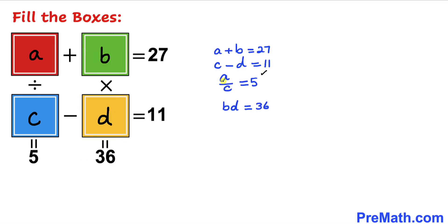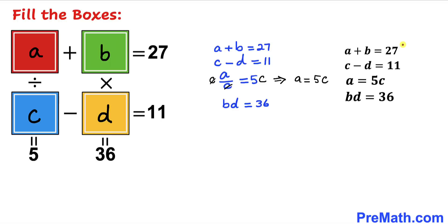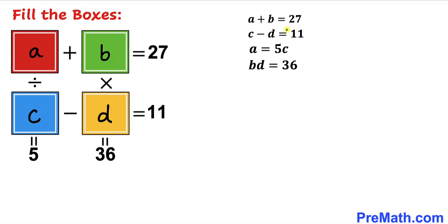For the division equation, let's remove the fraction by multiplying both sides by C. The C cancels, giving us A equals 5C. I've now written down this system of four equations with four variables — equations one through four — and we'll solve for A, B, C, and D.